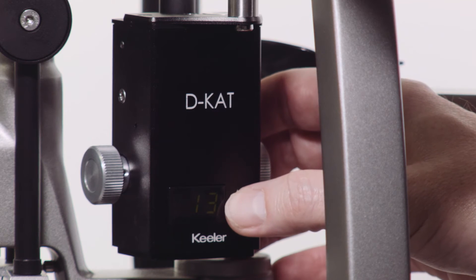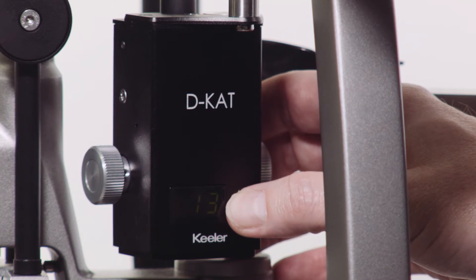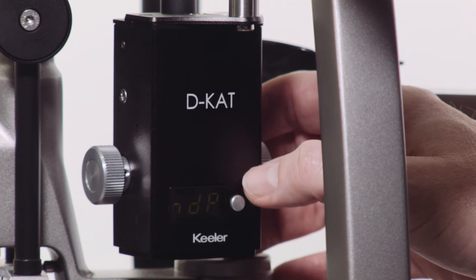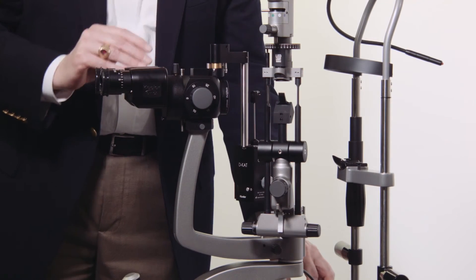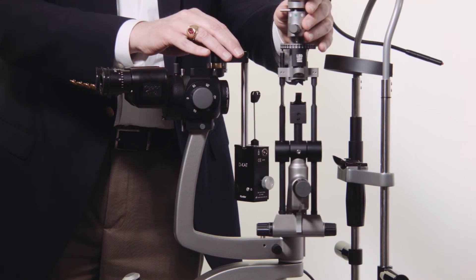The D-K-AT features a display that allows you to read IOP measurements in dark environments. The D-K-AT mounts the same way as the K-AT and operating principles are identical.